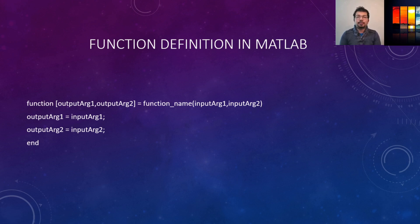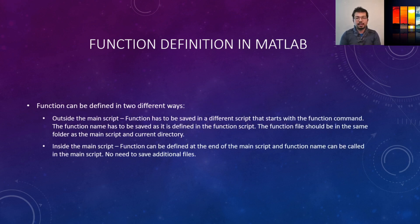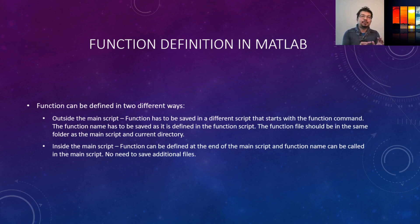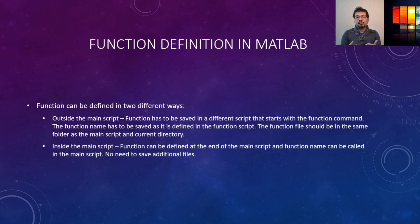There are two ways to define a function in MATLAB. One way is to define it outside the main script — we open a new script, define a function, save it with a name, and call that function name inside the main script. The function file must be saved in the same folder or current directory as the main script. The other way is to define it inside the main script at the end — we define the function there and it will execute when we call the function name.